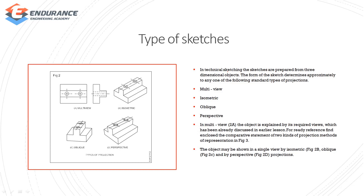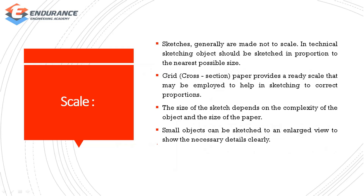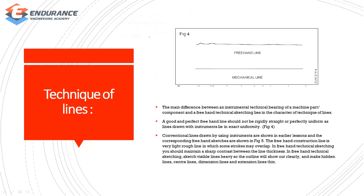When using a drawing path, you can explain it with multi-view, isometric view, and 2D projection. When you want to use a scale, you can use a grid. You can set a grid for two-dimensional objects and then set a scale. The size of the sketch depends on the complexity of the object and the size of the paper. Small objects can be sketched to an enlarged view to show the necessary details clearly.